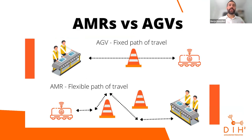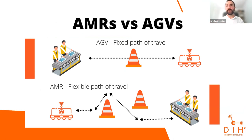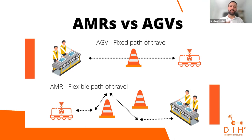On AMRs versus AGVs: as a general rule, an AGV has a fixed path of travel — if it encounters an obstacle it stops and you need to remove the obstacle for it to continue. An AMR usually has a flexible path of travel and can avoid obstacles and reach the destination by itself.